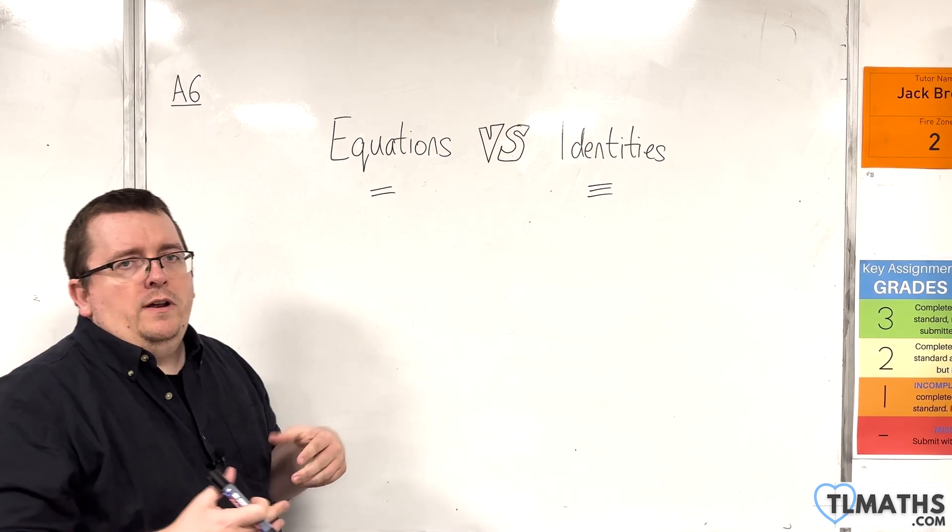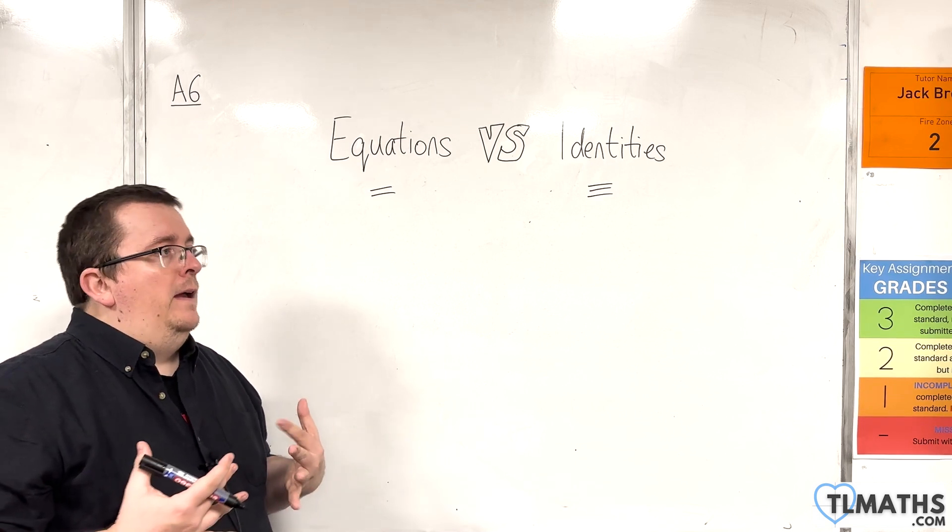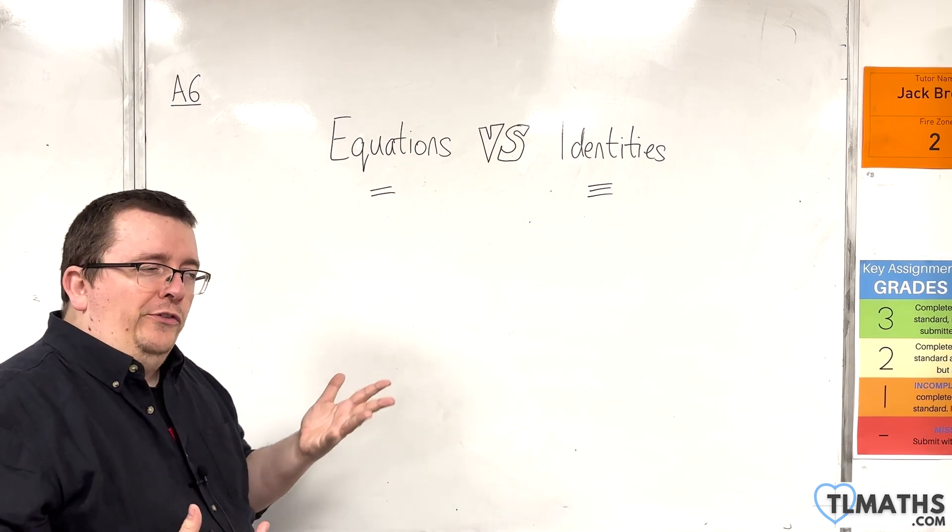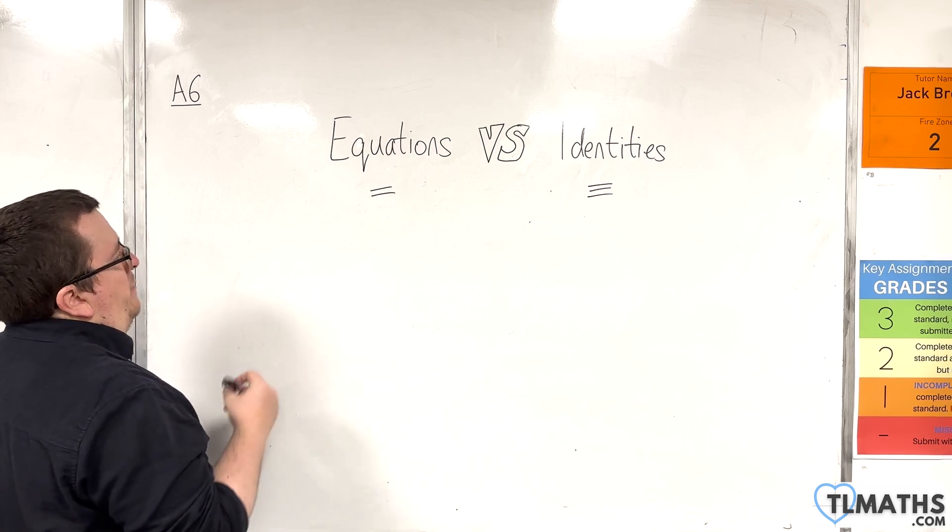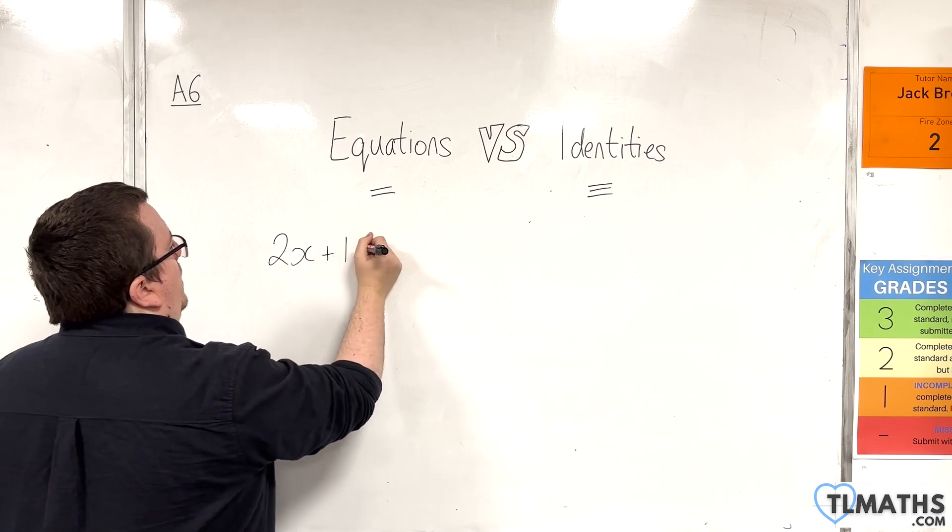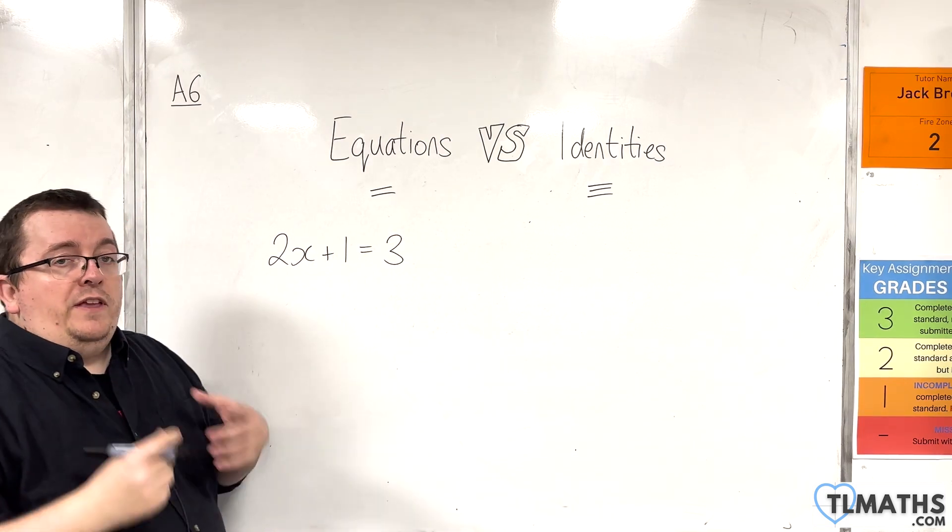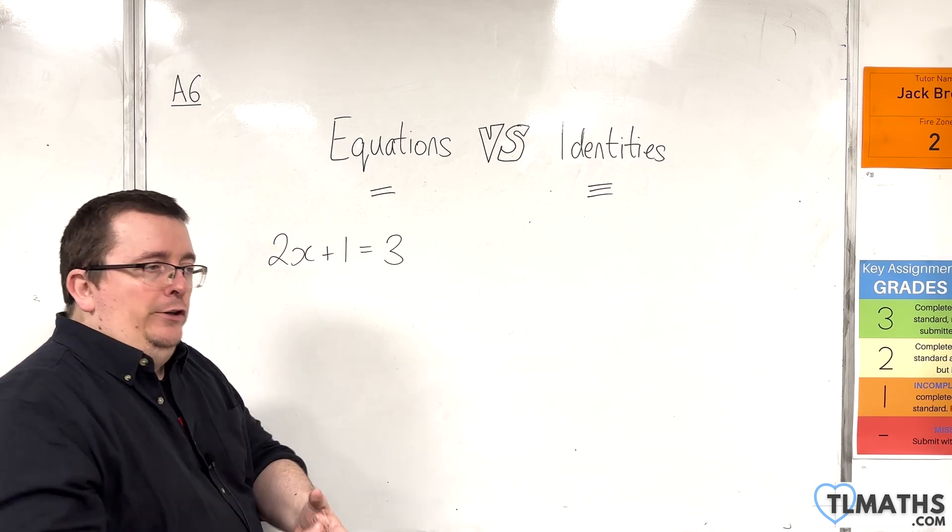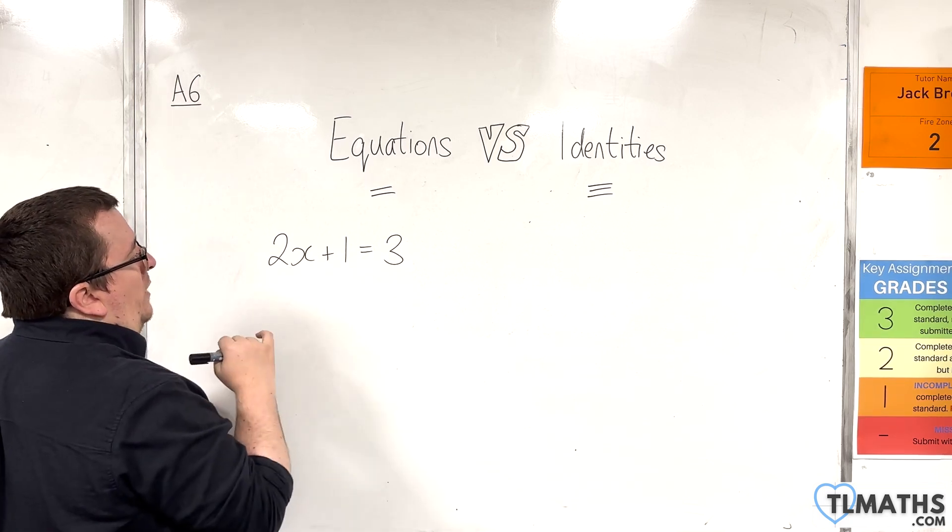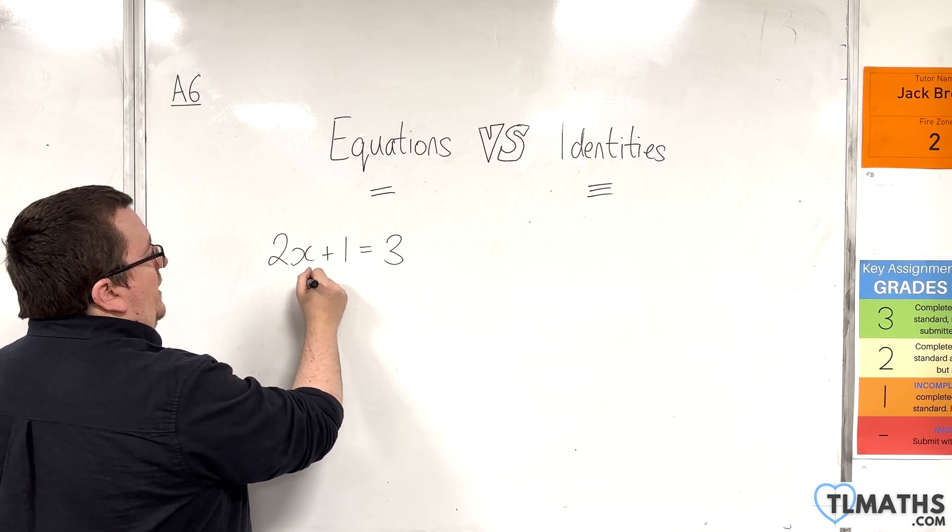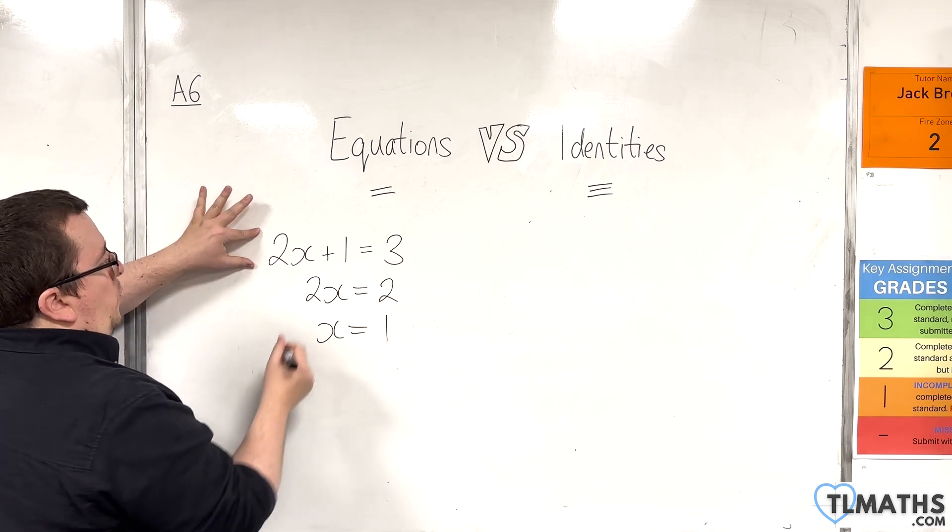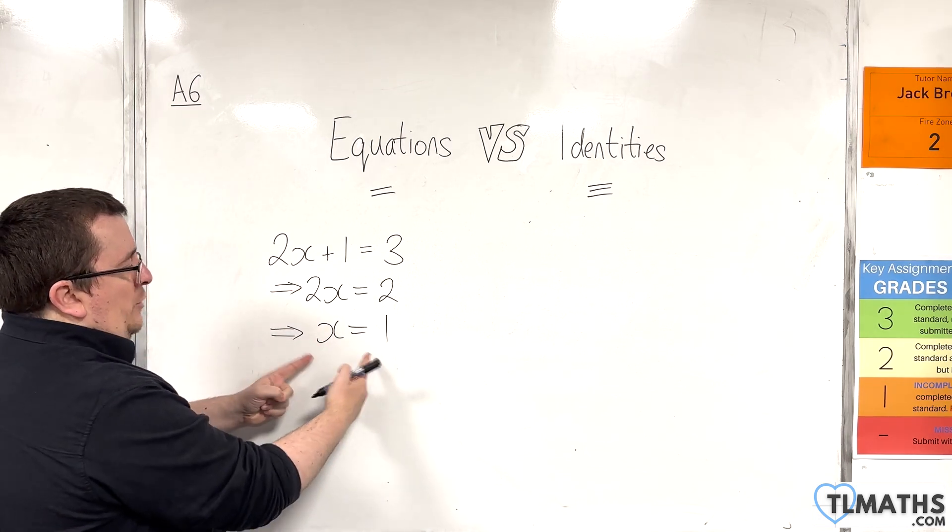An equation has solutions. And we usually think about that as like one solution or two solutions or three solutions or four solutions, depending on the type of equation that you've got. For example, if you've got an equation like 2x + 1 = 3, then this is an equation because it has a solution. We can subtract 1 from both sides, we can then divide through by 2. So we get 2x = 2, and then divide through by 2, so x = 1. This equation has one solution, x equals 1.